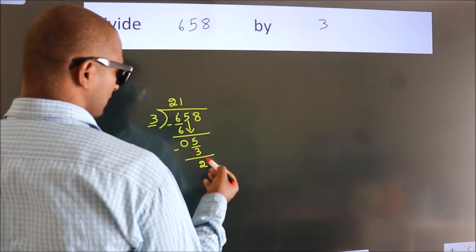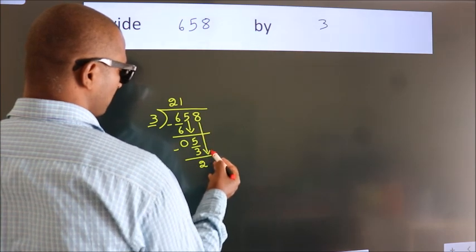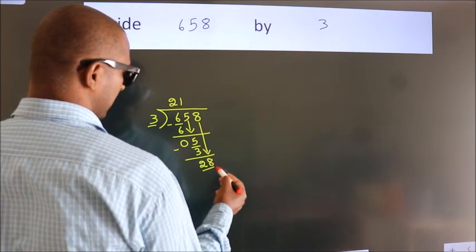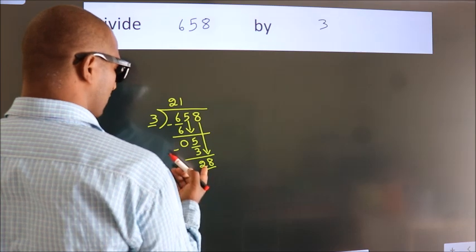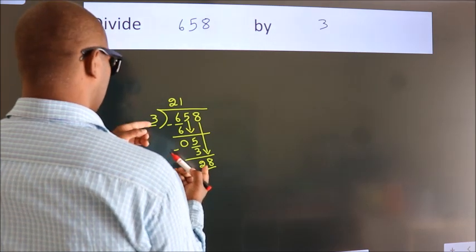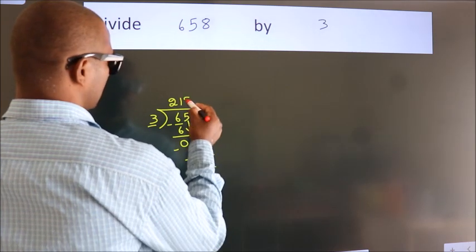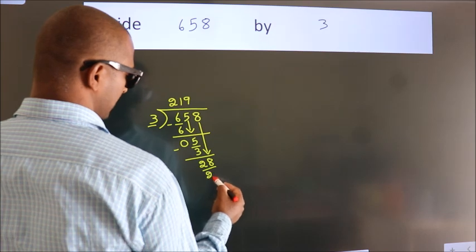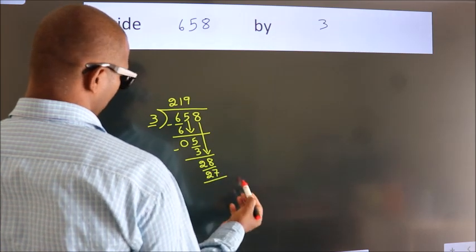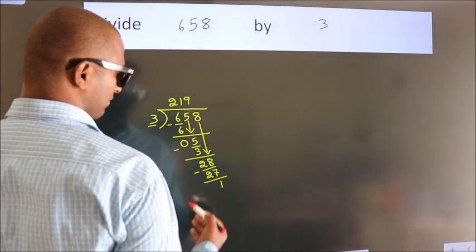After this, bring down the beside number, so 8 down, so 28. A number close to 28 in 3 table is 3 9's, 27. Now we subtract, we get 1.